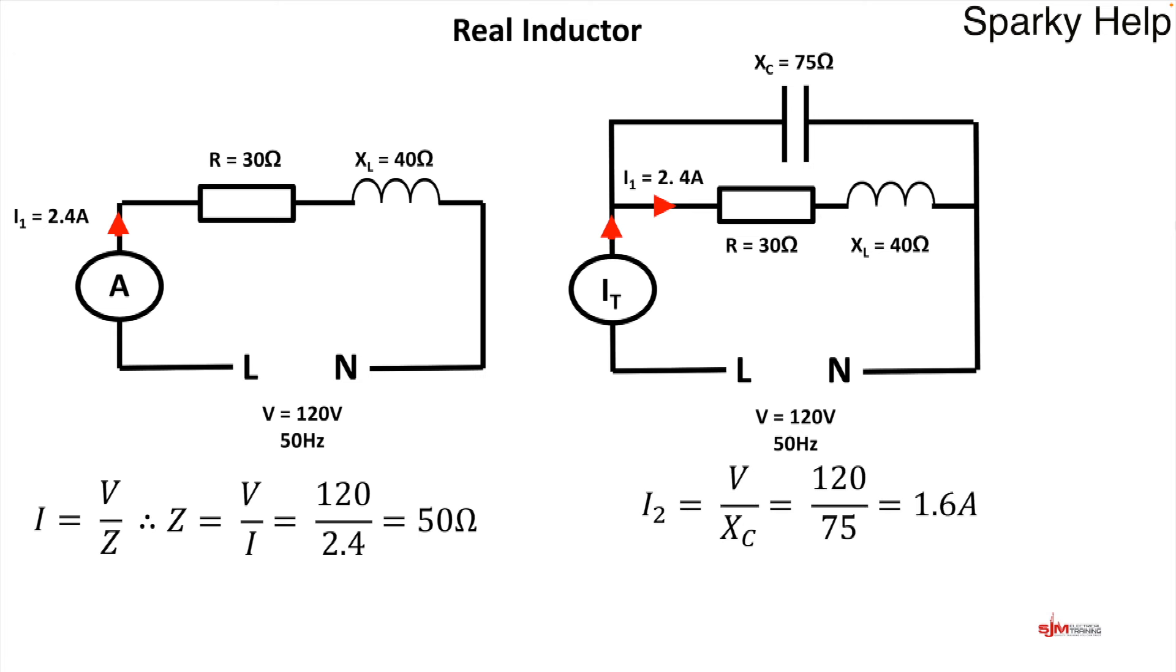So we know we have 2.4 amps passed through the real inductor. And we can use Ohm's law to work out the current passing through the capacitance. We have 1.6 amps. Now we can apply Kirchhoff's current law, and it's I1 plus I2.